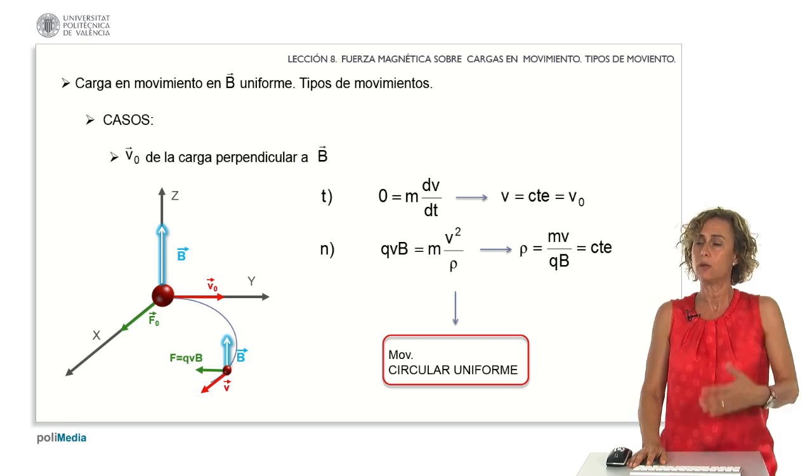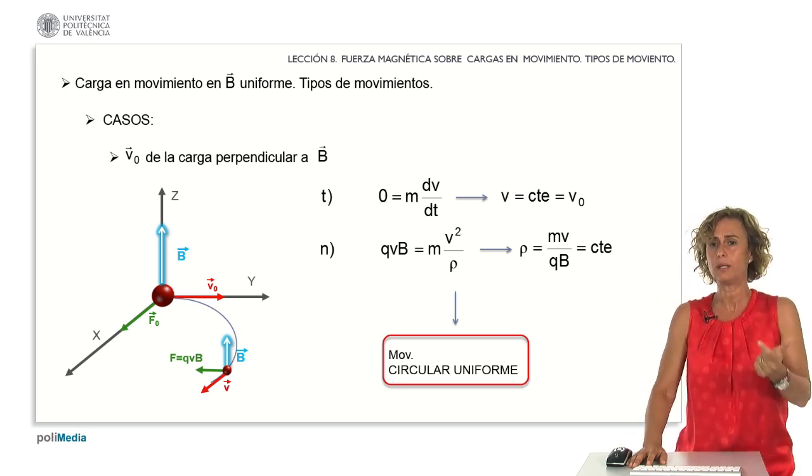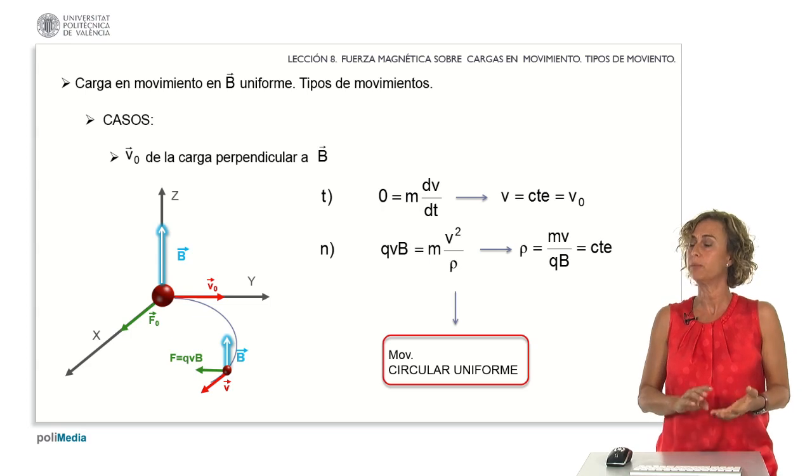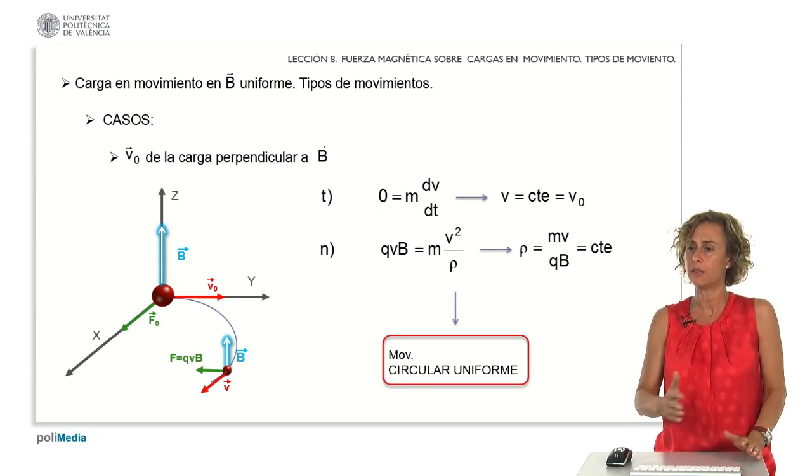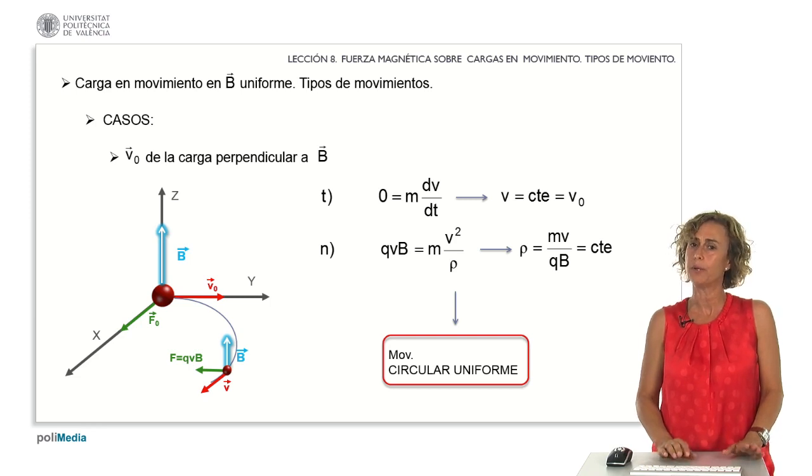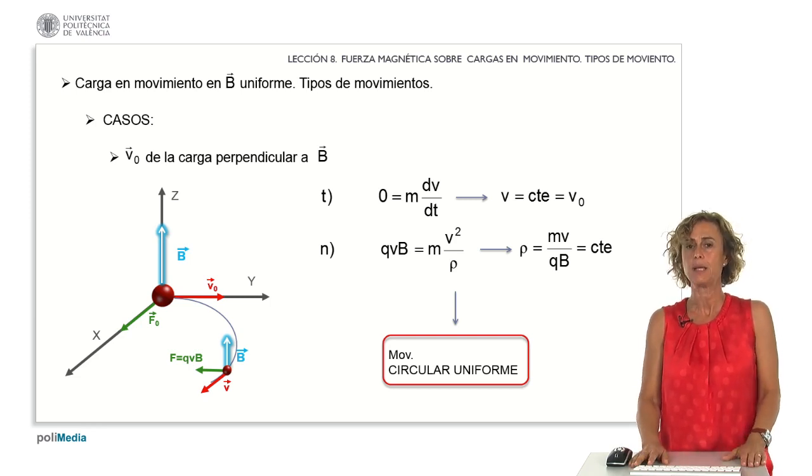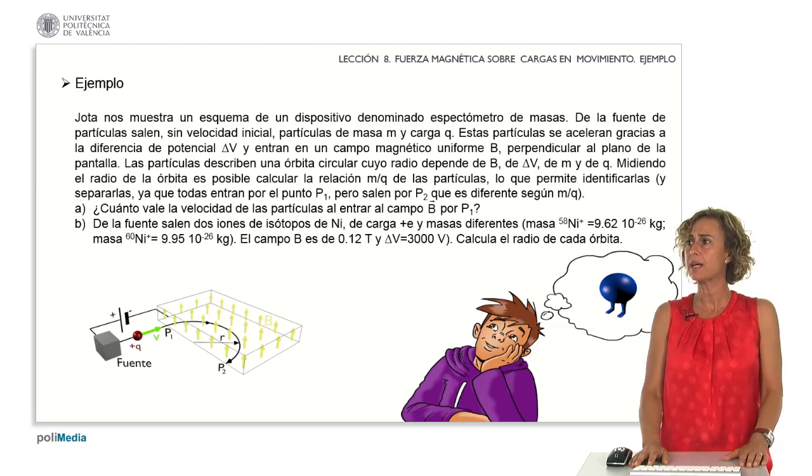In another scenario, when v and B are neither parallel nor perpendicular but form an angle alpha, the particle will trace a helical path. However, this topic won't be covered in this class. Having seen this, let's move on to an example.